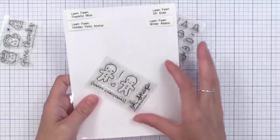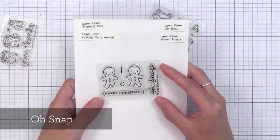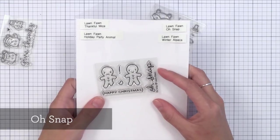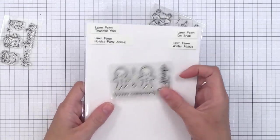Another tinier set from Lawn Fawn is Oh Snap. Absolutely adorable. My son has already stolen this stamp set from me and plans to make lots of cards for his friends. I think it's really fun.